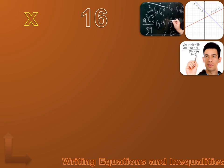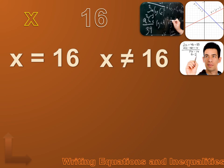Now, there are various relationships that might exist between x and 16. x might be equal to 16, and we'd write that as x equals 16. But it's also possible that x doesn't equal 16 — x might be 17, 18, or any number that's not 16. And we'd write it this way: x does not equal 16.